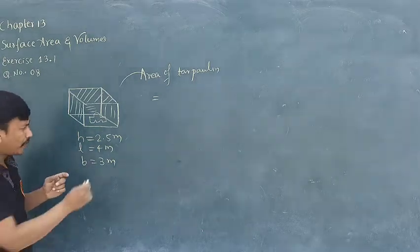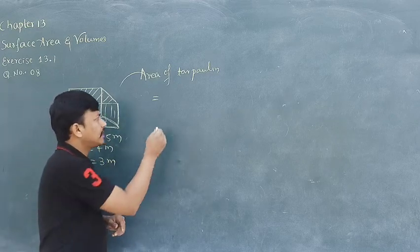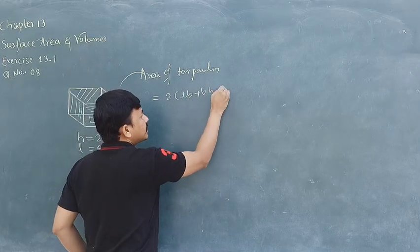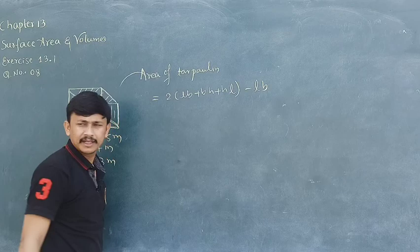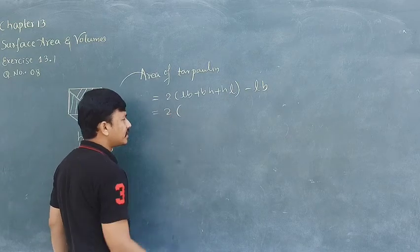Area of tarpaulin is equal to 2 in bracket LB plus BH plus HL minus L into B. This is equal to 2 in bracket, what is length here?